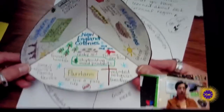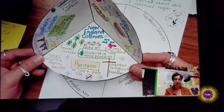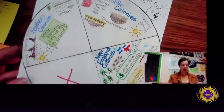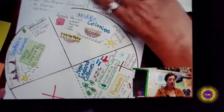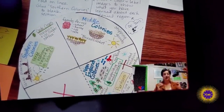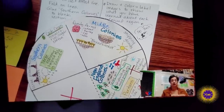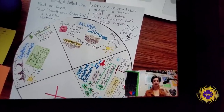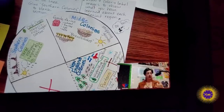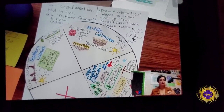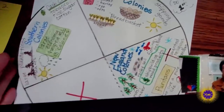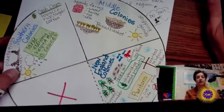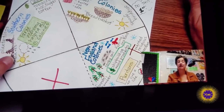The teacher concludes her video: 'You're going to be filling out a couple of charts because the primary objective for this unit is to describe the differences between the New England, the middle, and the southern colonies — those three regions — including religion, the people, their economies, all of it. Get this done and then take a picture of it and attach it to your assignment to turn it in.'